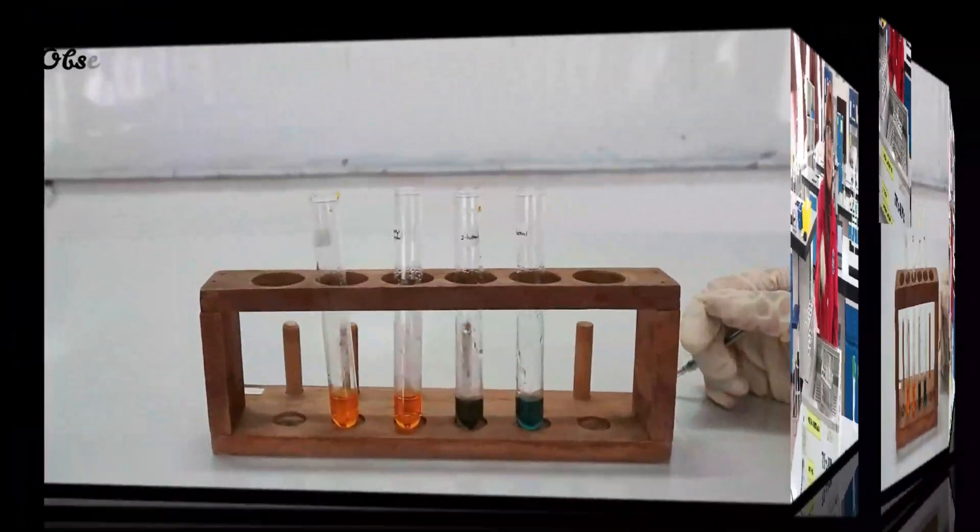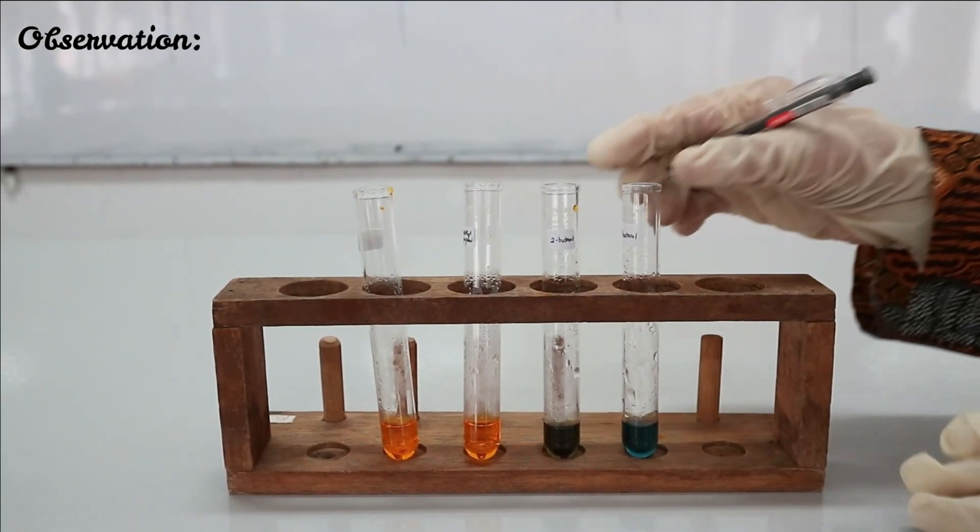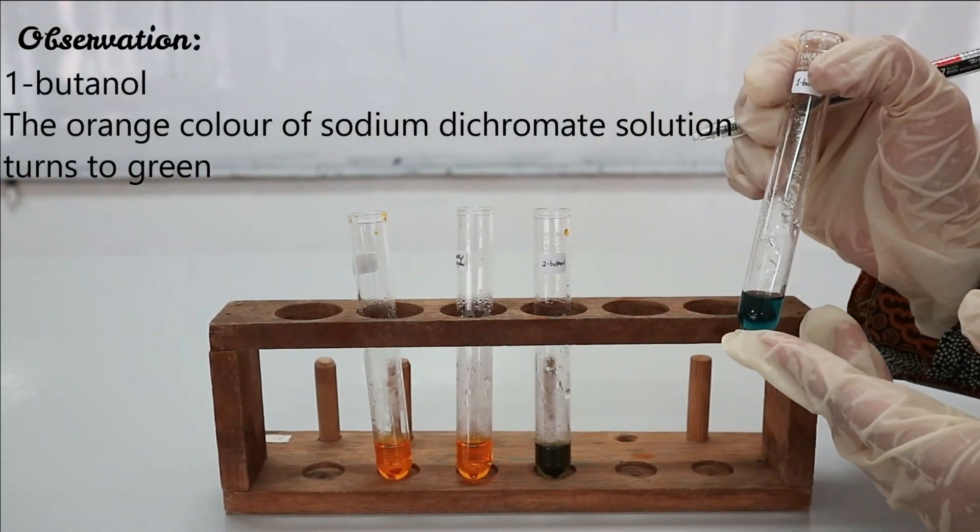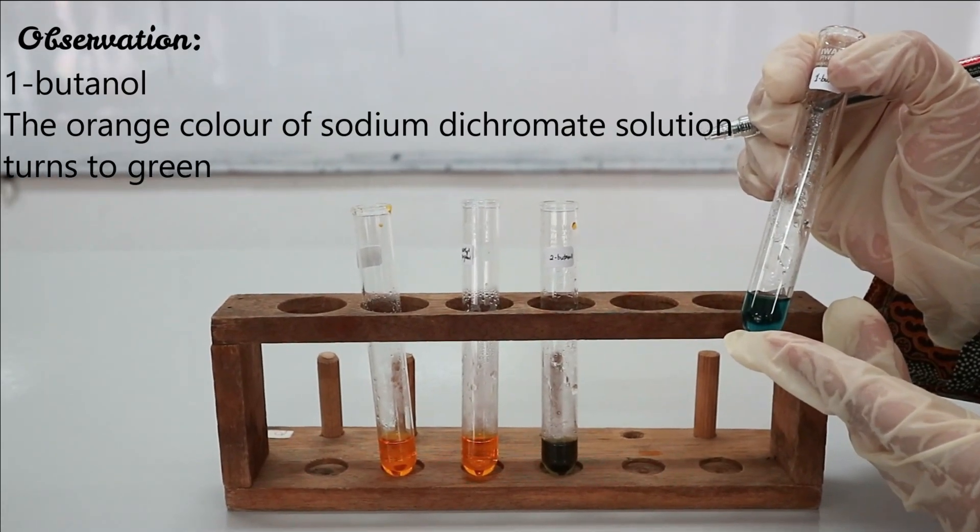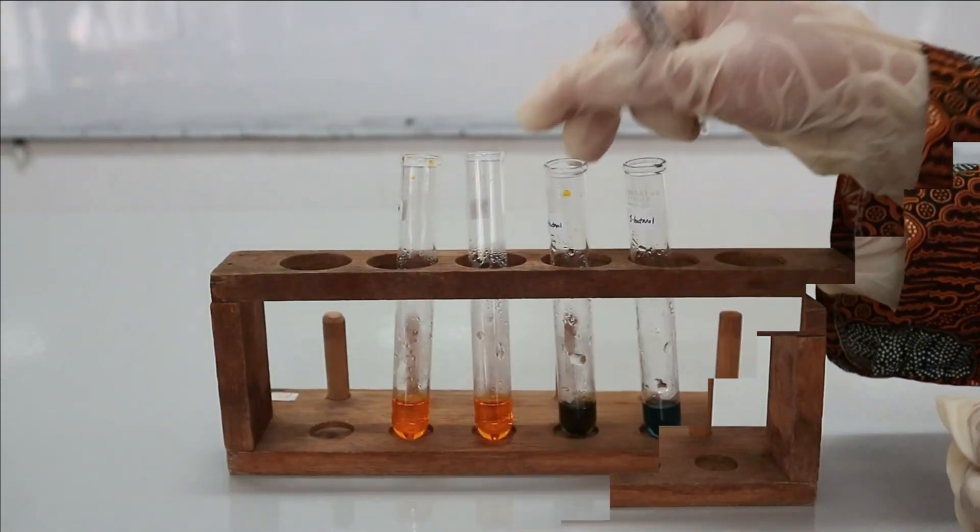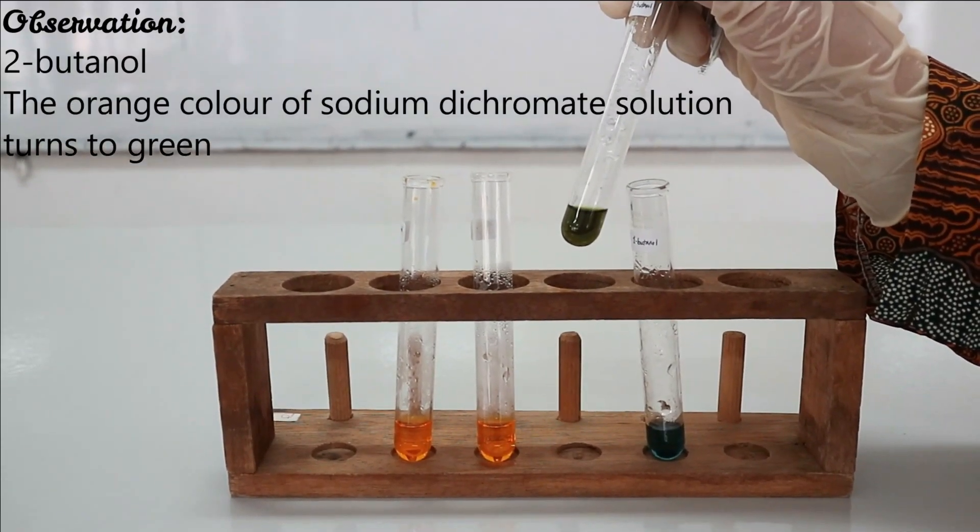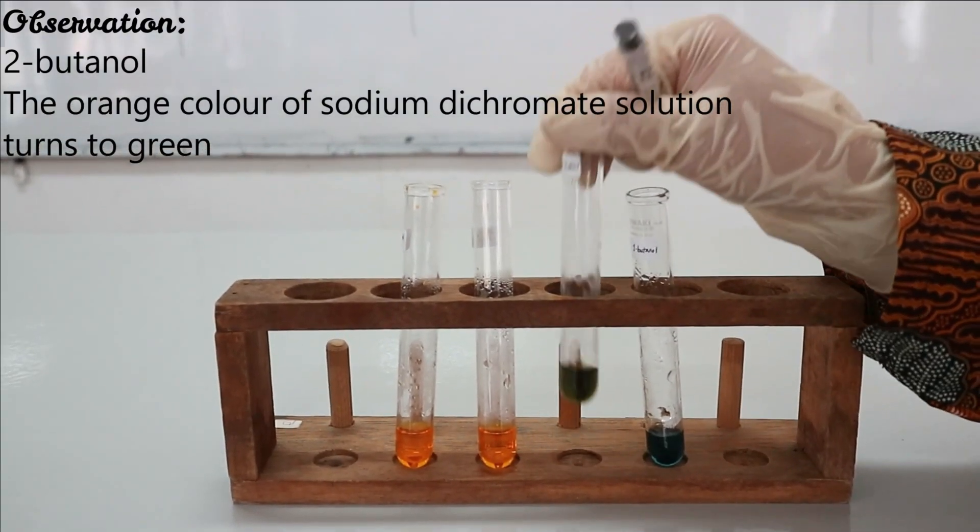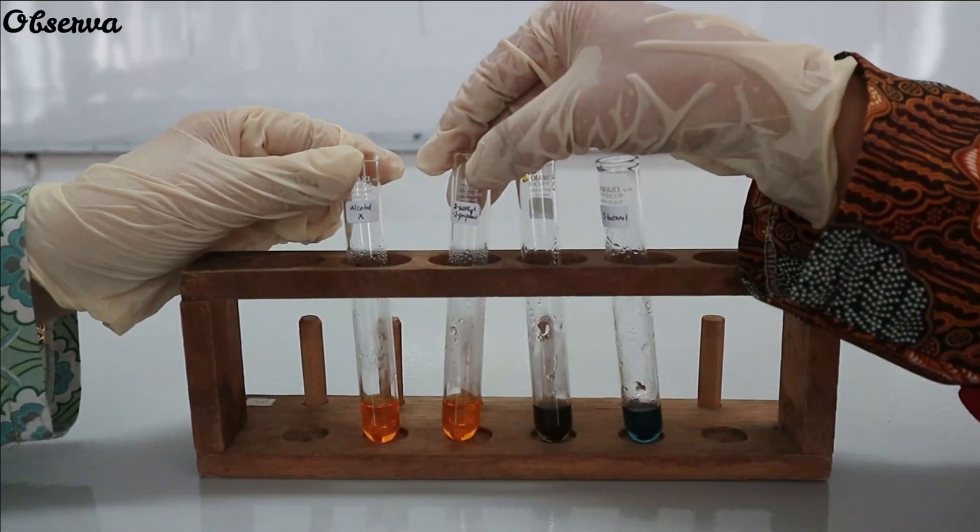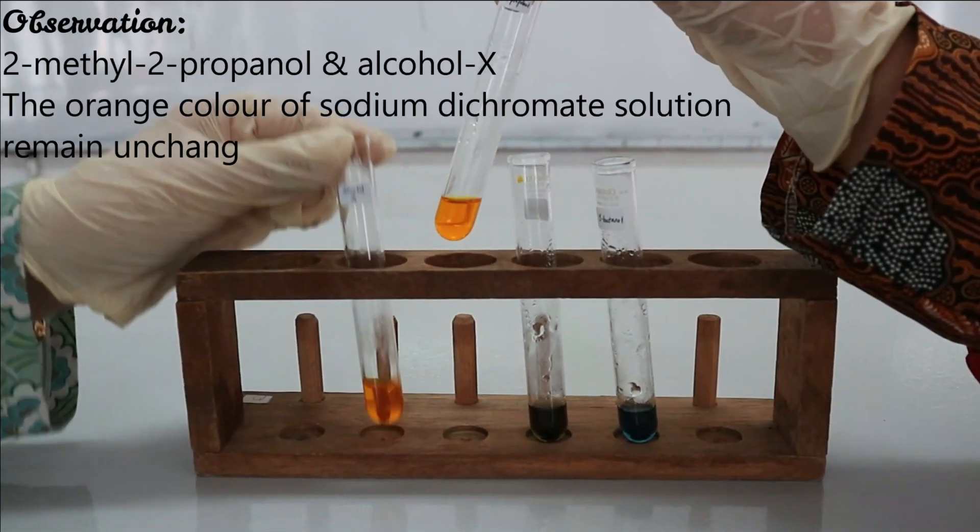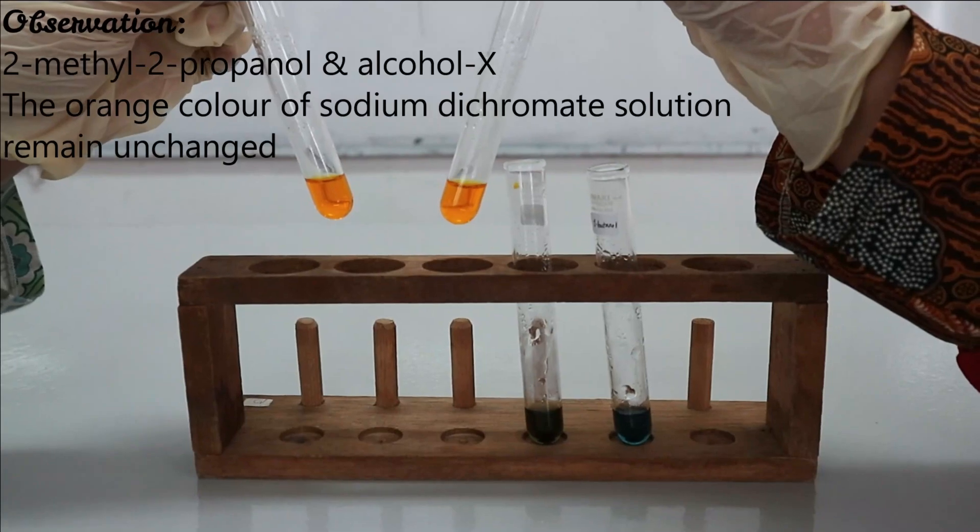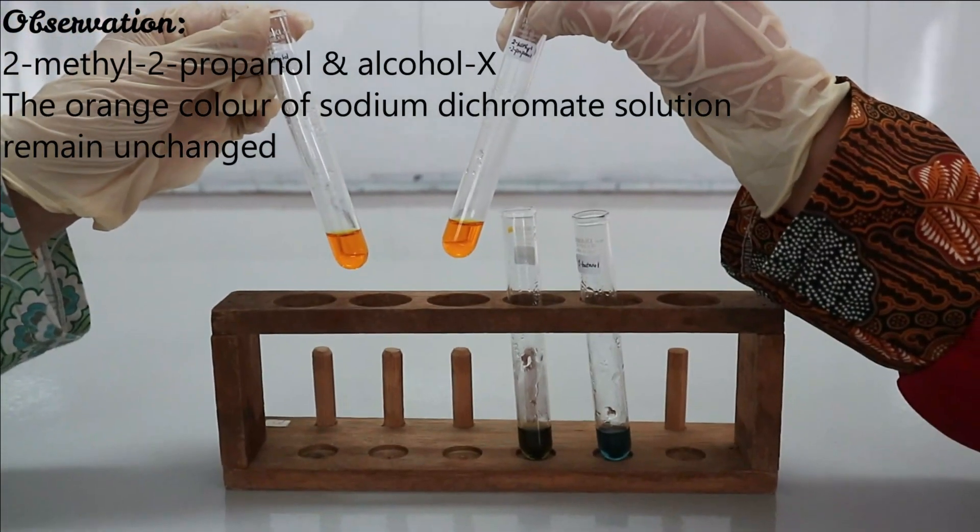Now record the observations. For 1-butanol, the orange color of sodium dichromate solution turns to green. For 2-butanol, the orange color of sodium dichromate solution turns to green. While for 2-methyl-2-propanol and alcohol X, the orange color of sodium dichromate remains unchanged.